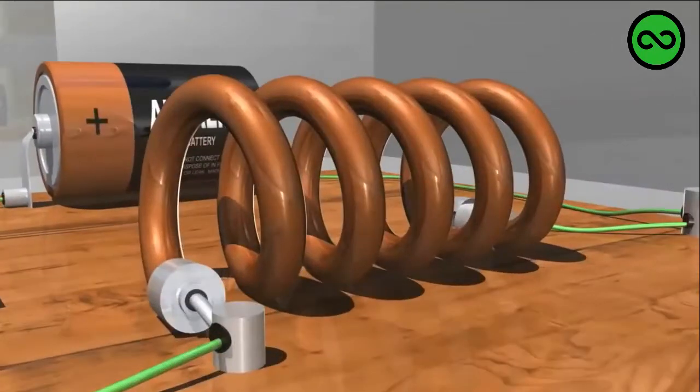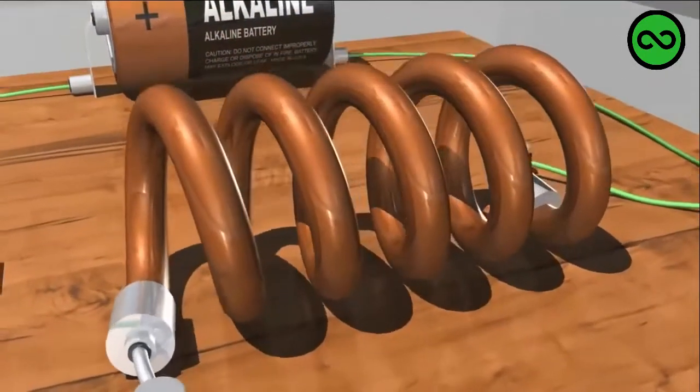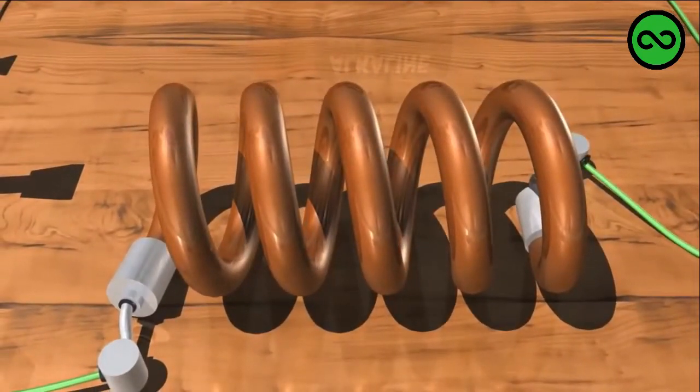Inductors store energy in the form of magnetic fields that are generated around them when a current passes through them. They are called inductors because they induce a voltage in their coils when that magnetic field changes. We will see this in a minute.